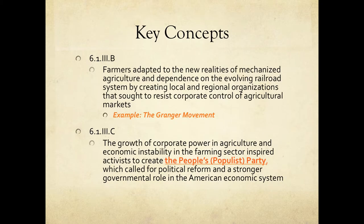Here we're going to look primarily at Key Concept 6.1, Roman numeral 3, letter B — which we've already covered — as a reminder and review: the Granger Movement. Farmers had to adapt to new realities of agriculture with new machines: the harvester, the reaper, the combine. They were also dependent upon the railroad system, so they developed regional and local organizations like the Granger to try to protect themselves. As we saw, it eventually falls apart.